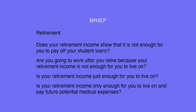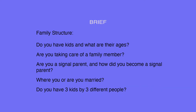Retirement: Does your retirement income show that it is not enough for you to pay off your student loans? Are you going to work after you retire because your retirement income is not enough to live on? Is your retirement income only enough to live on and pay future potential medical expenses? Family structure: Do you have kids and what are their ages? Are you taking care of a family member? Are you a single parent, or how did you become a single parent? Were you or are you married?